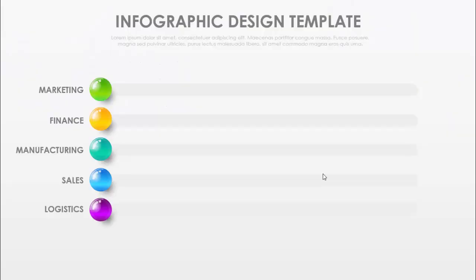In today's tutorial I'm going to show you how to create a five bar graph options infographic slide in PowerPoint. This is how the slide looks — I've added five options: marketing, finance, manufacturing, sales, and logistics. Upon mouse click it will move and reveal the percentage.